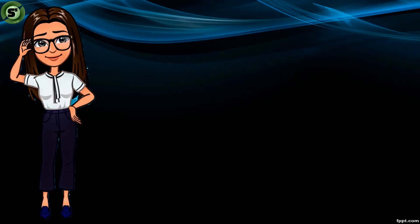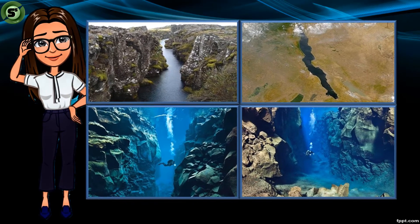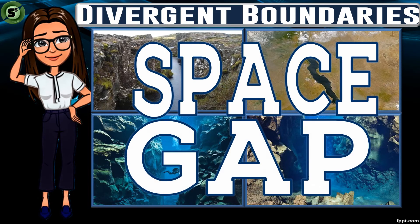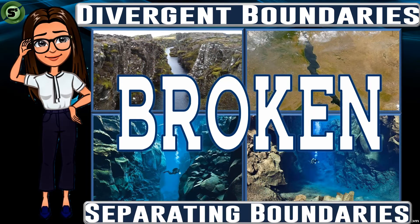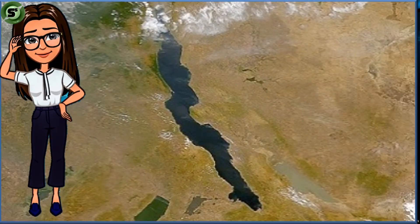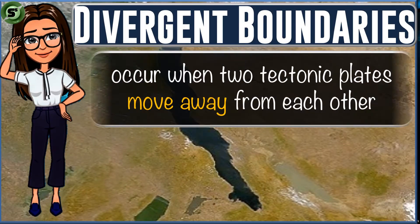To officially start our lesson, here are pictures showing the results of divergent boundaries. The two pictures above happen on continental divergence, and the two pictures below happen when oceanic divergence occurs. All pictures show a space or gap between crusts. Thus we can say that the earth's crust is broken in separating boundaries. Divergent boundaries occur when two tectonic plates move away from each other.